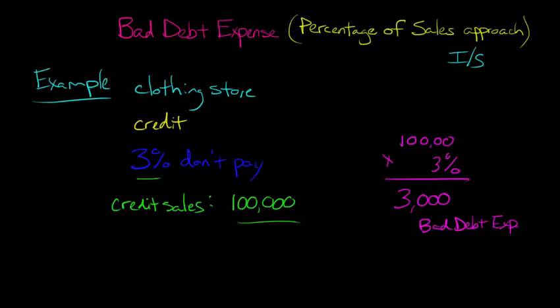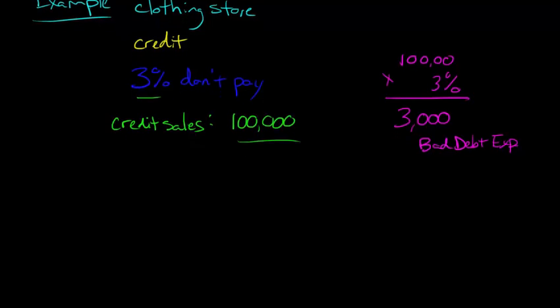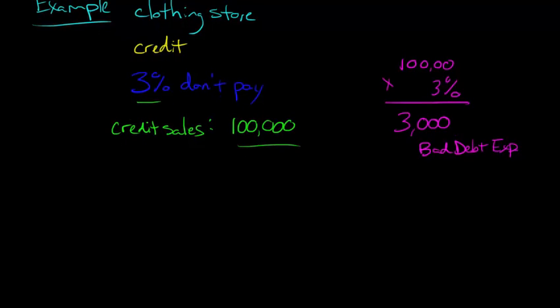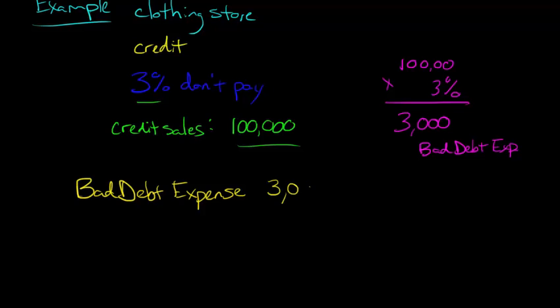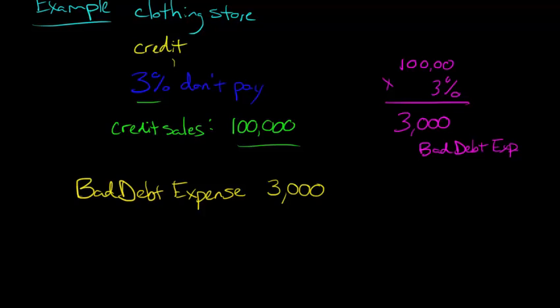So now let's take a look at the journal entry. We're going to debit bad debt expense. Since it's an expense, it's going to go to the income statement and reduce net income. So bad debt expense for $3,000 — that's based on our percentage of sales. Based on historically 3% not paying, we estimate that 3% of this $100,000 will not be collected.